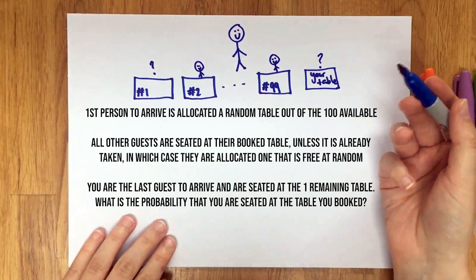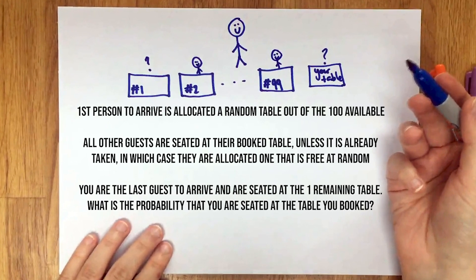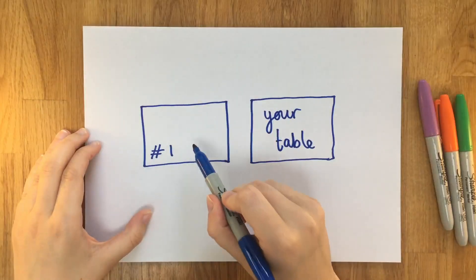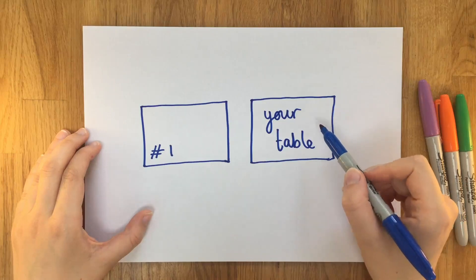What we want to look at is what's the probability that the table you get sat at is the one that you booked. 100 tables feels like a large number to be working with, and I think the best way to break this problem down is to think about a smaller number of tables to start off with. So let's start by having a look at a two-table example and see what the probability is. We've got table number one that was booked by guest number one, and we've got your table that you booked.